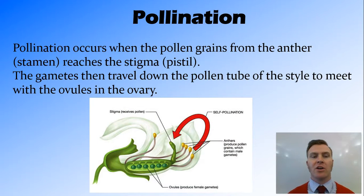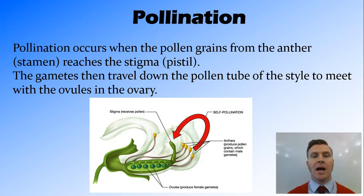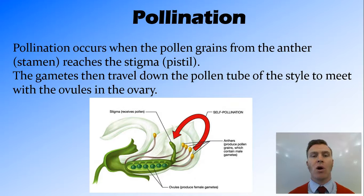Pollination occurs when the pollen grains go from the anther to the stigma in the centre. Once this happens, the gametes — the sex cells within those pollen grains — travel down the pollen tube of the style and meet up with the female gametes down in the ovary, forming a zygote.